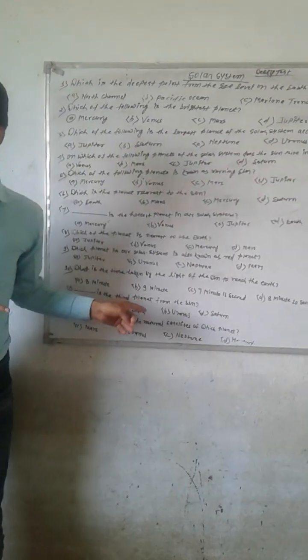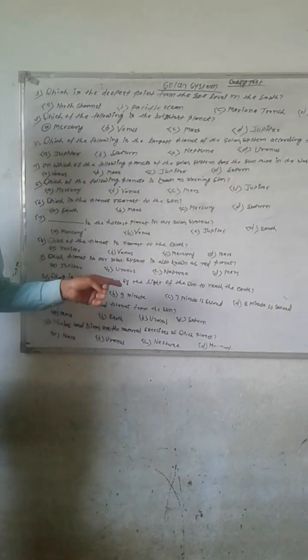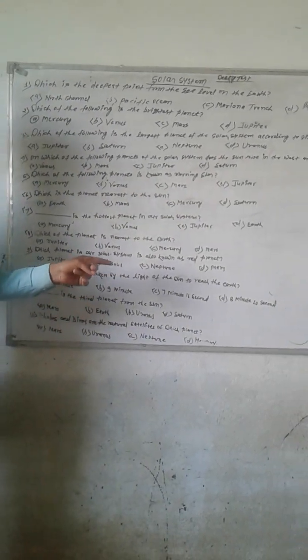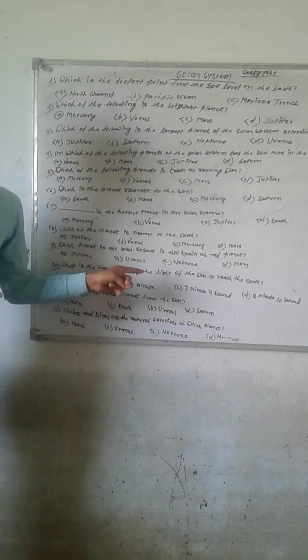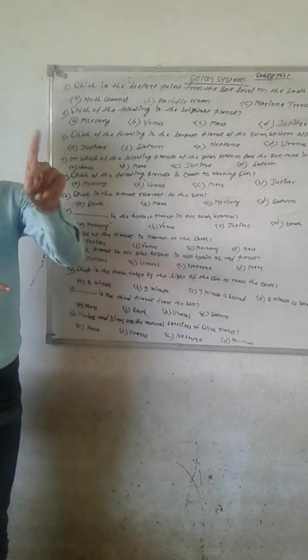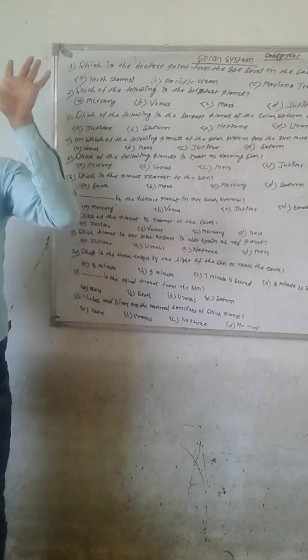Blue Planet — what is Earth? The Earth is called the Blue Planet. Because it is 71% water.